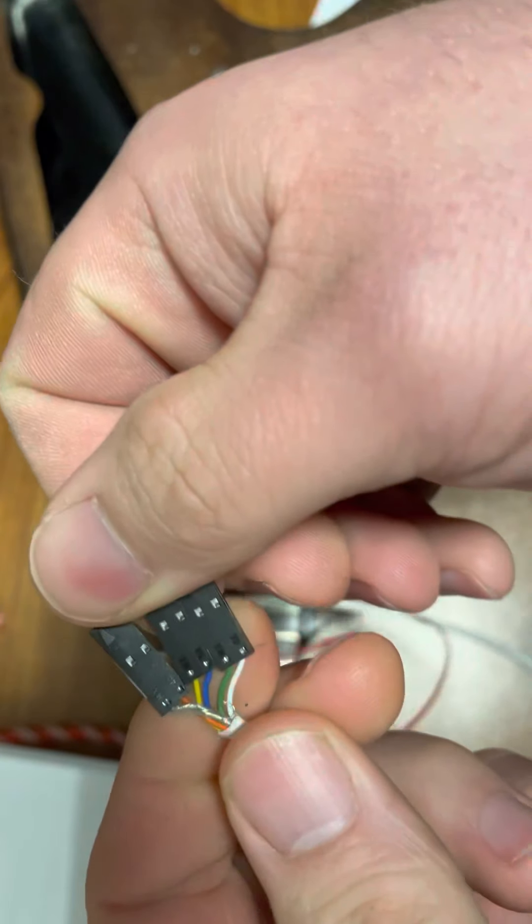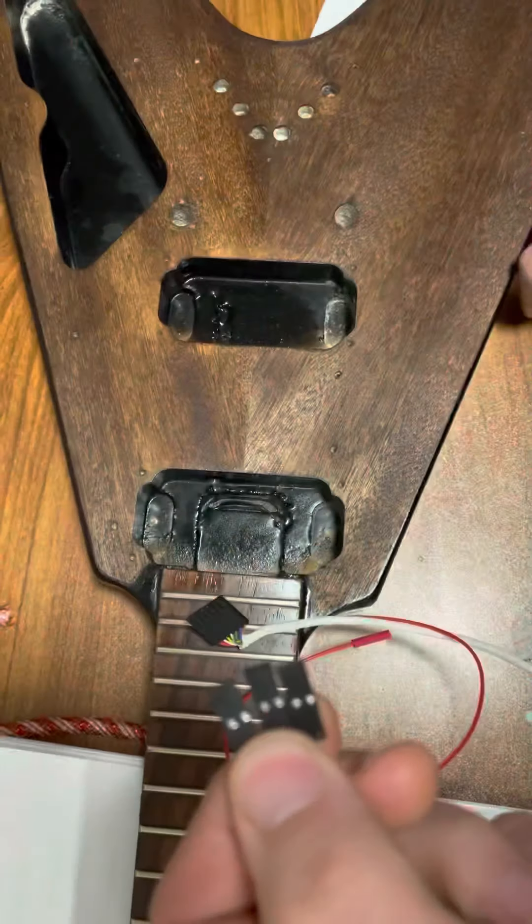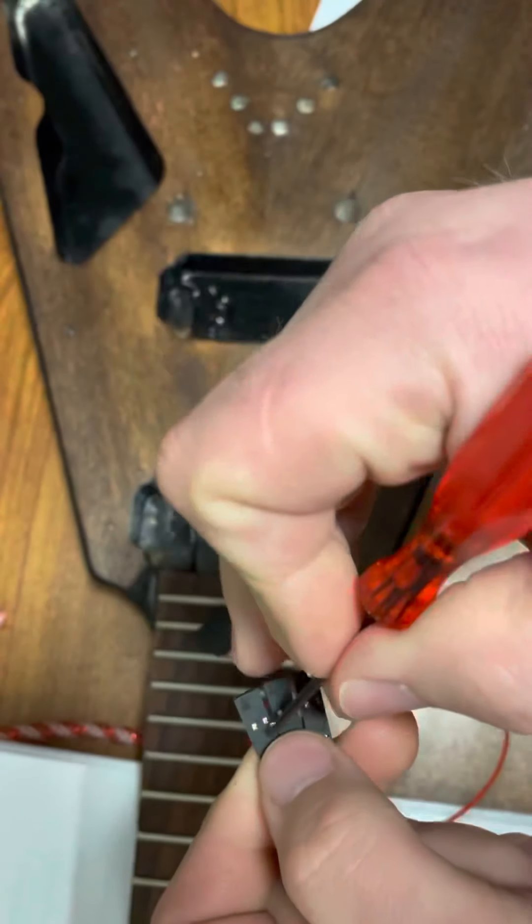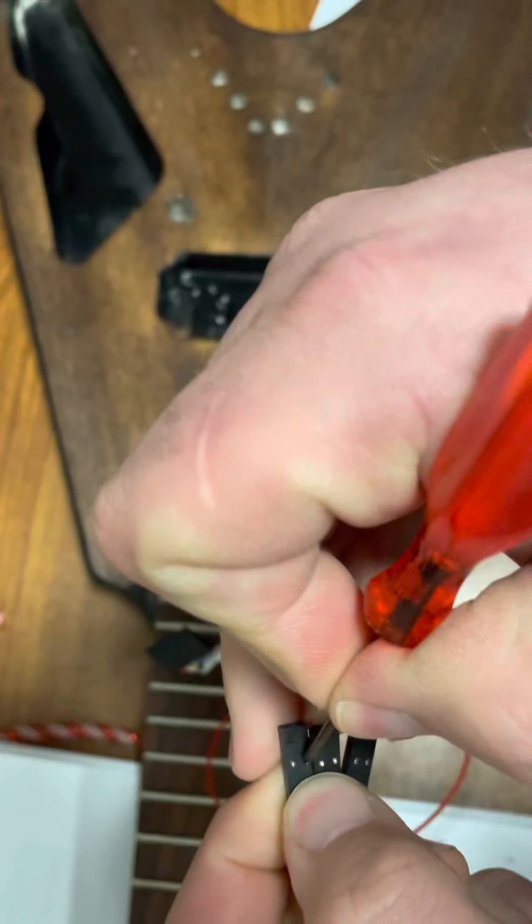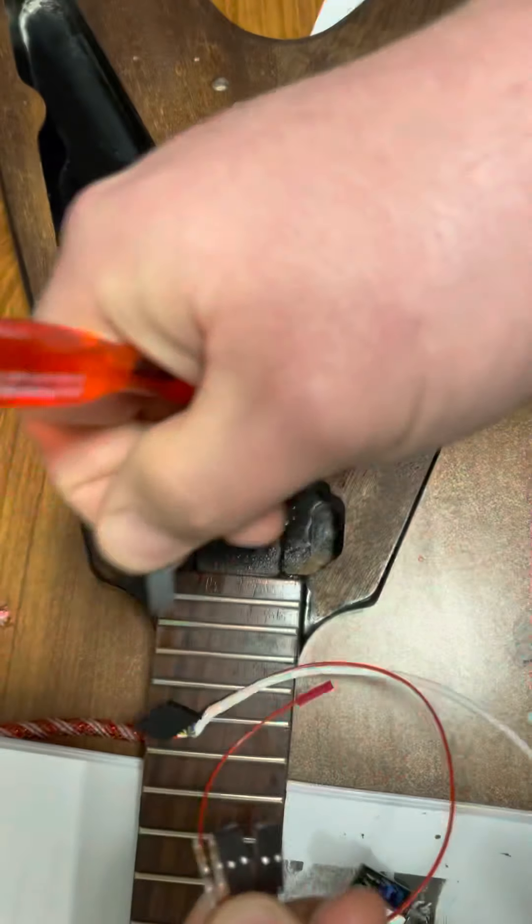So with EMG pickups, if you notice these little silver tangs, if you take a small screwdriver and just push these down, that comes straight off.